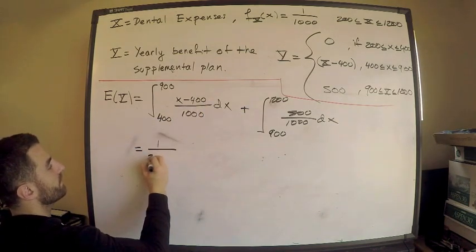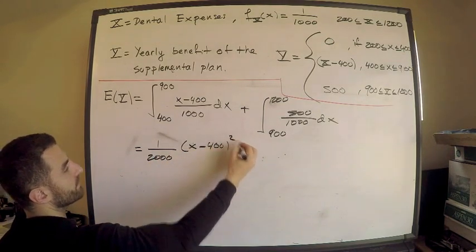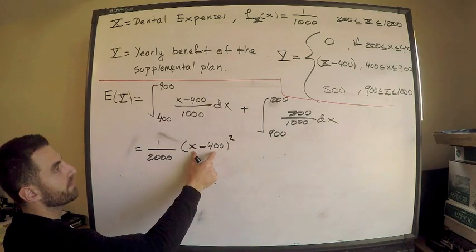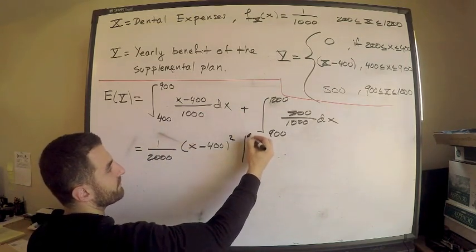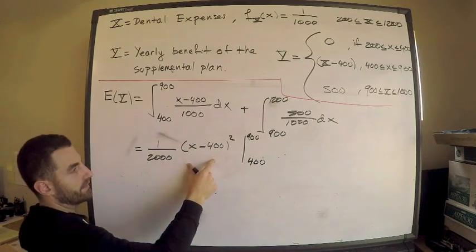This is equal to, this is 1 over 2000 times X minus 400 squared. Is this right? Yeah. Take the derivative of this. I get the integrand back. Going from 400 to 900. You need to be so familiar with these problems that you can do this really easily.